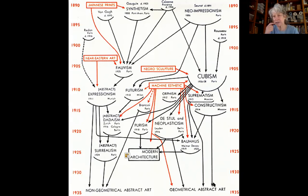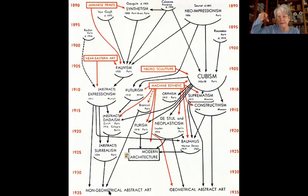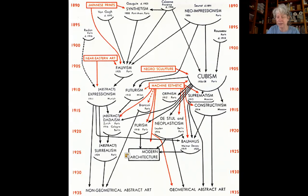Geometrical abstraction is based on squares, rectangles, circles — the shapes and forms you learn about when you study geometry. Non-geometrical abstract art is everything else, like the shape of a hand or an amoeba — something that's not a circle, cone, or square. That was Matisse's style, as you recall.